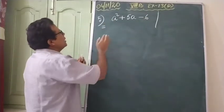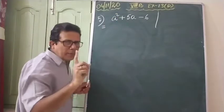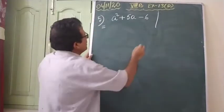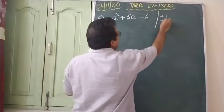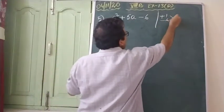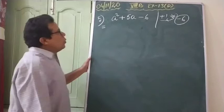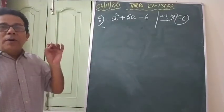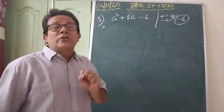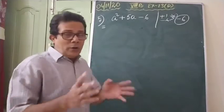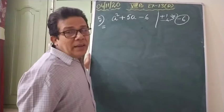Now, you first write the coefficient of the highest power term. For a², no number means the coefficient is 1. What sign is there? Plus sign, so you write plus 1. What is the constant here? Minus 6. You have to multiply these two. After multiplying, what result comes? Minus 6. Now, you have to find the factors of minus 6. With the help of the factors of minus 6, by doing addition or subtraction, you have to bring plus 5a.